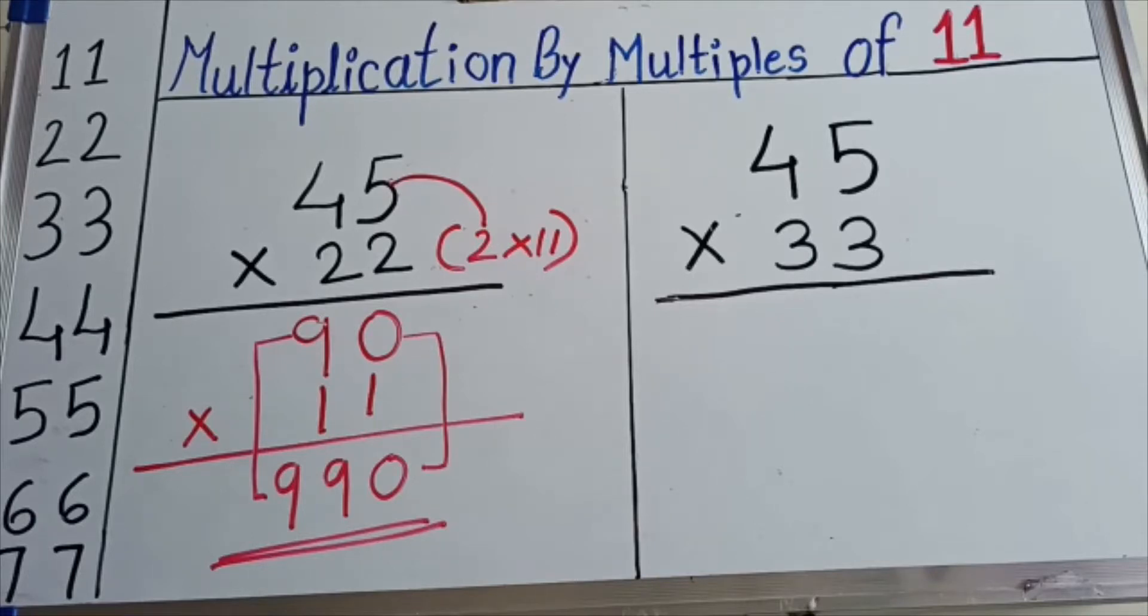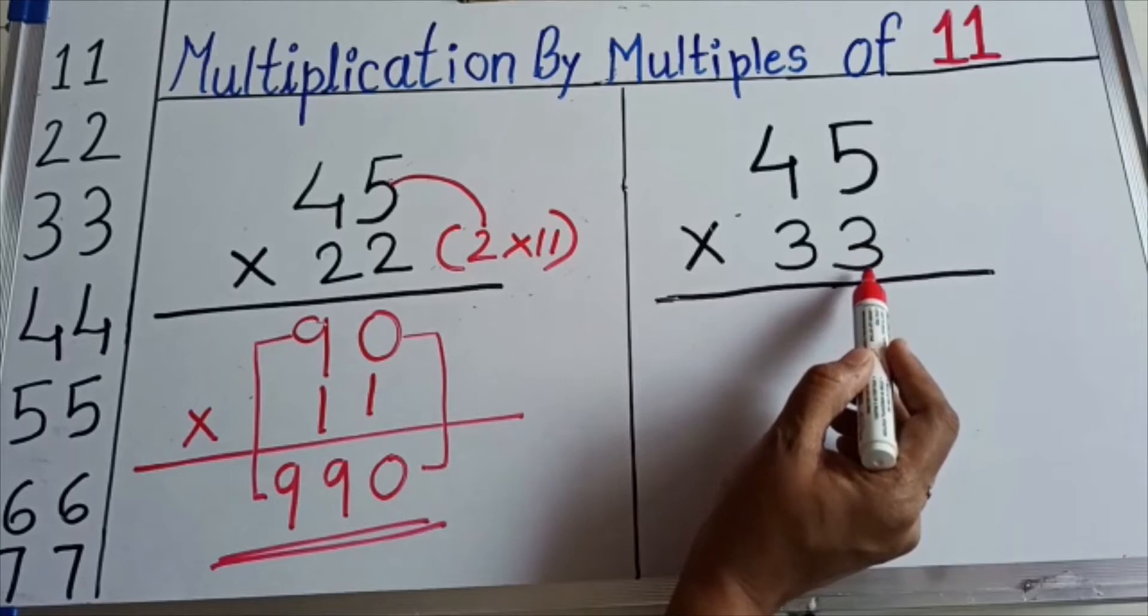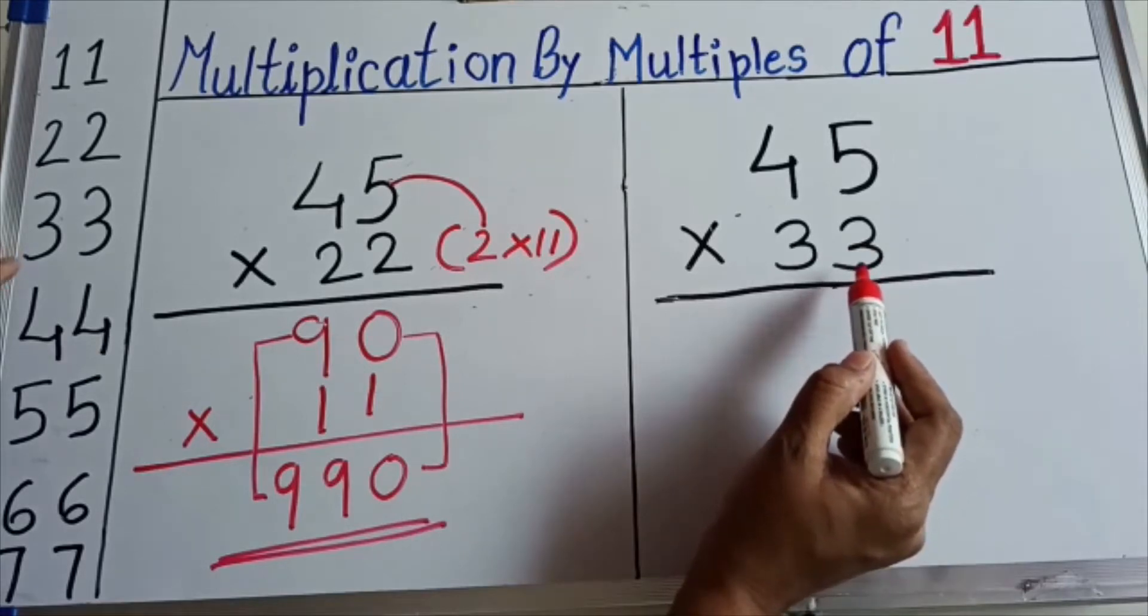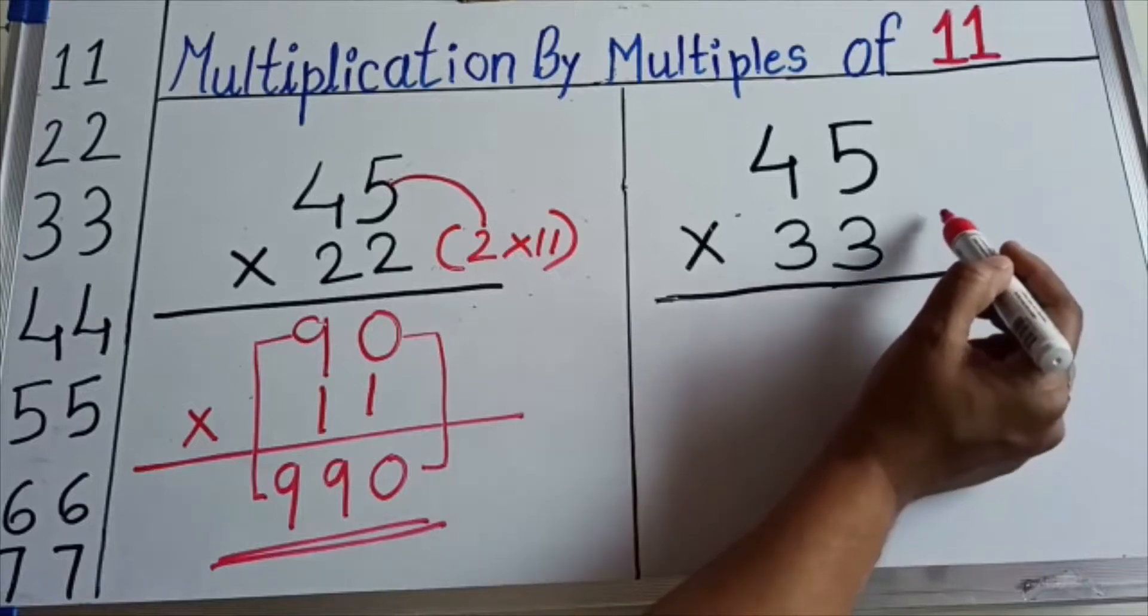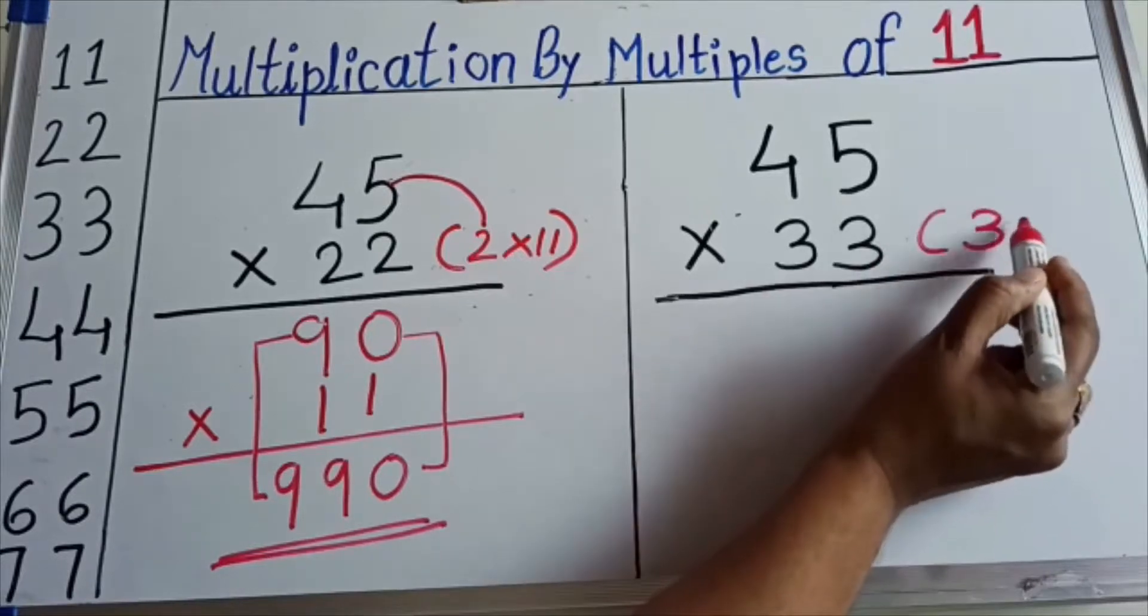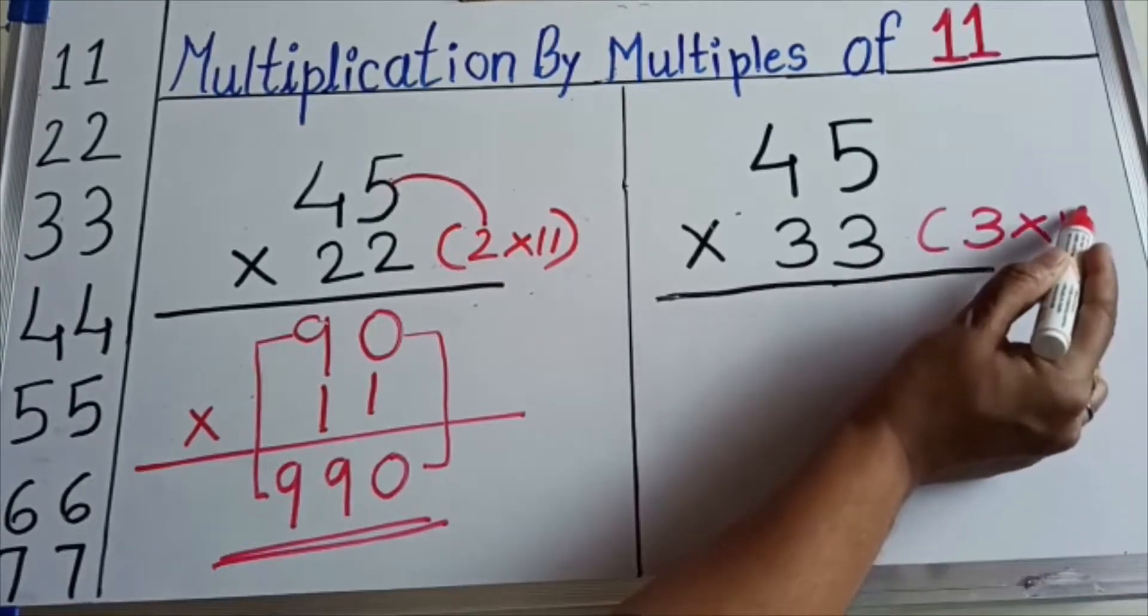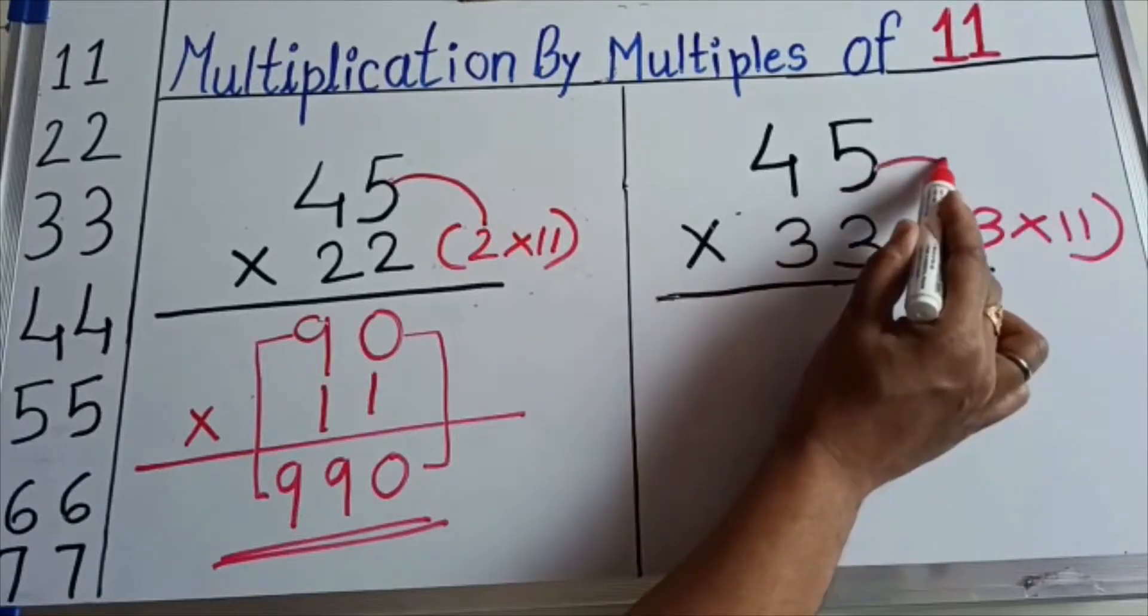Let's solve one more example. Again, 33 is the multiple of 11. 33 is the third rank in the table of 11, so I will write here as 3 into 11. Now let's multiply 45 with this 3.